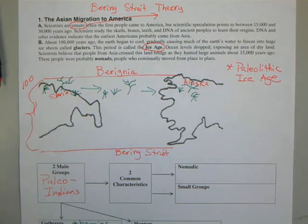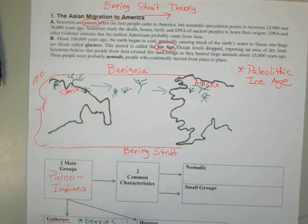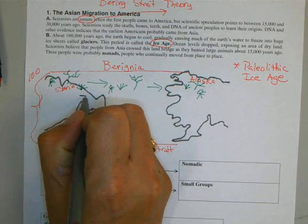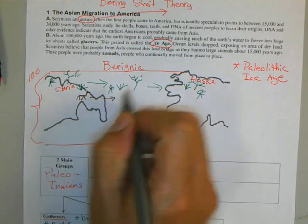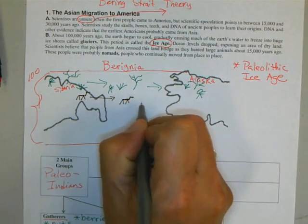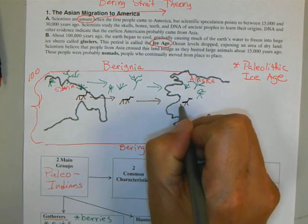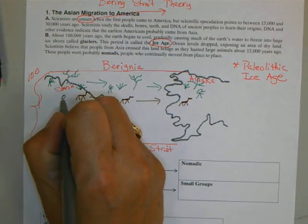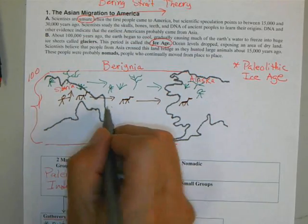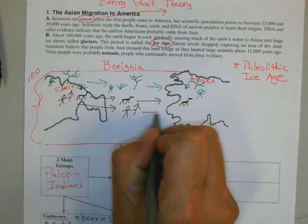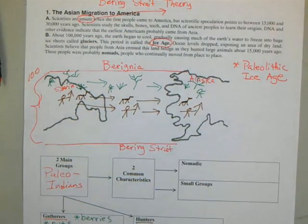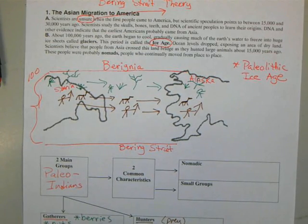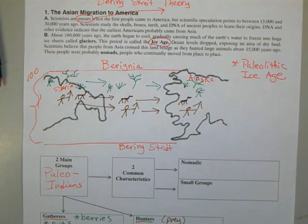According to the Bering Strait Theory, you're also going to have animals crossing from Siberia, across the bridge, into Alaska. And following those animals, you're going to have a group called the hunters. These guys have a spear and are following the prey. They're going to end up on the Alaska side, hunting prey such as deer and, at one time, mammoths.